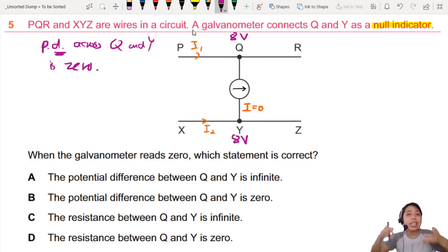This side on Y is eight volts. What's the potential difference? Eight minus eight is zero. So that's why I say PD. From here to here, there's no difference. Zero volts. Potential difference.